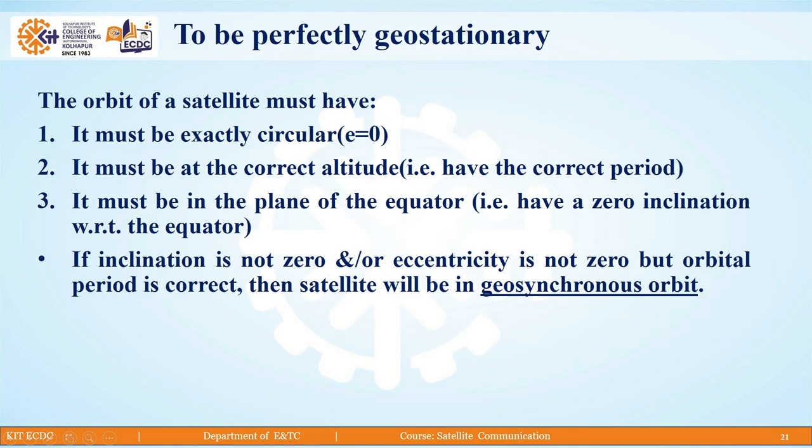To be a perfectly geostationary orbit, the satellite must have the following: First, it must be exactly circular, meaning eccentricity should be 0. It must be at the correct altitude, meaning it should have the correct period. Third, it must be in the plane of the equator, that is have 0 inclination with respect to the equator.